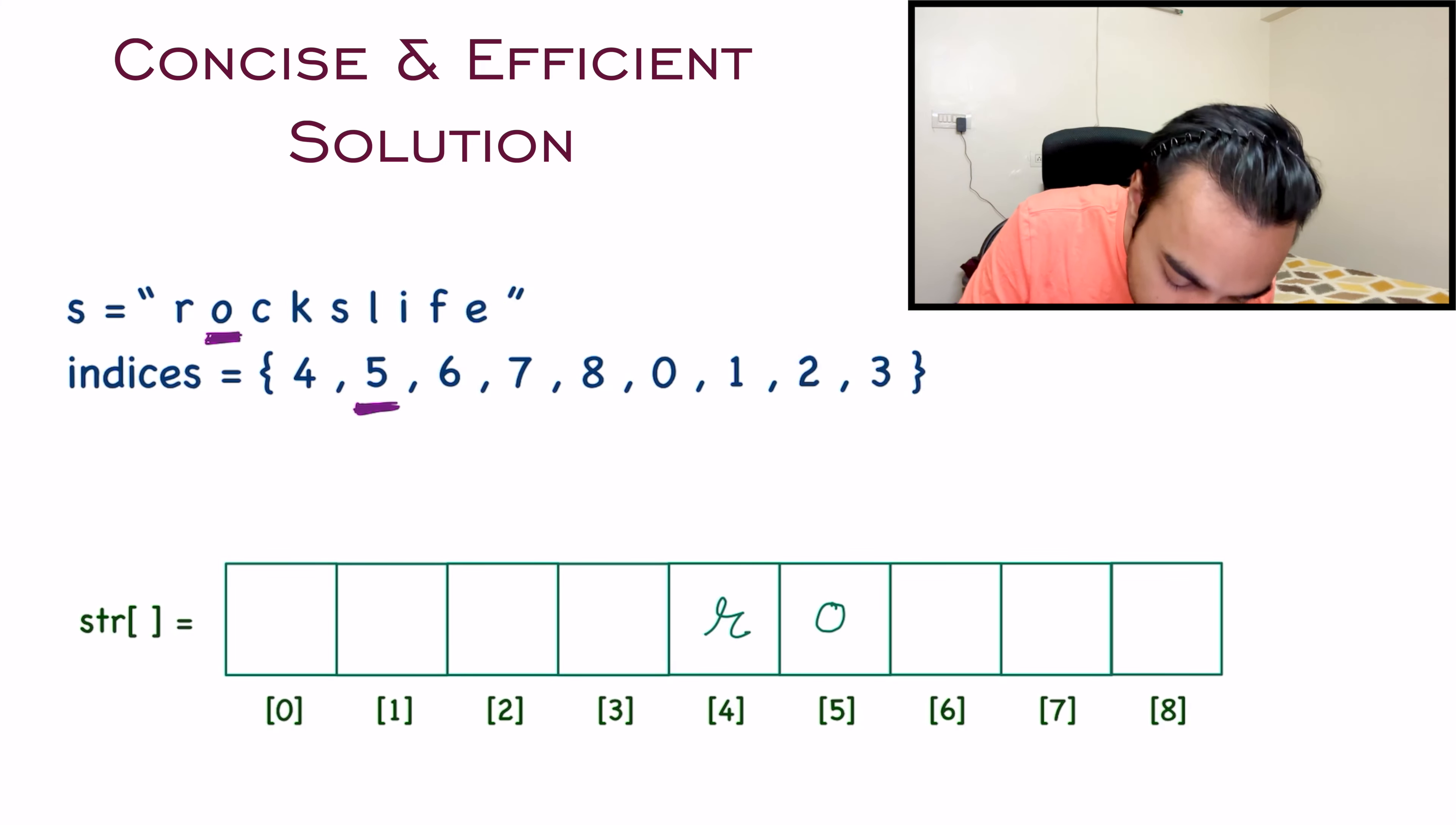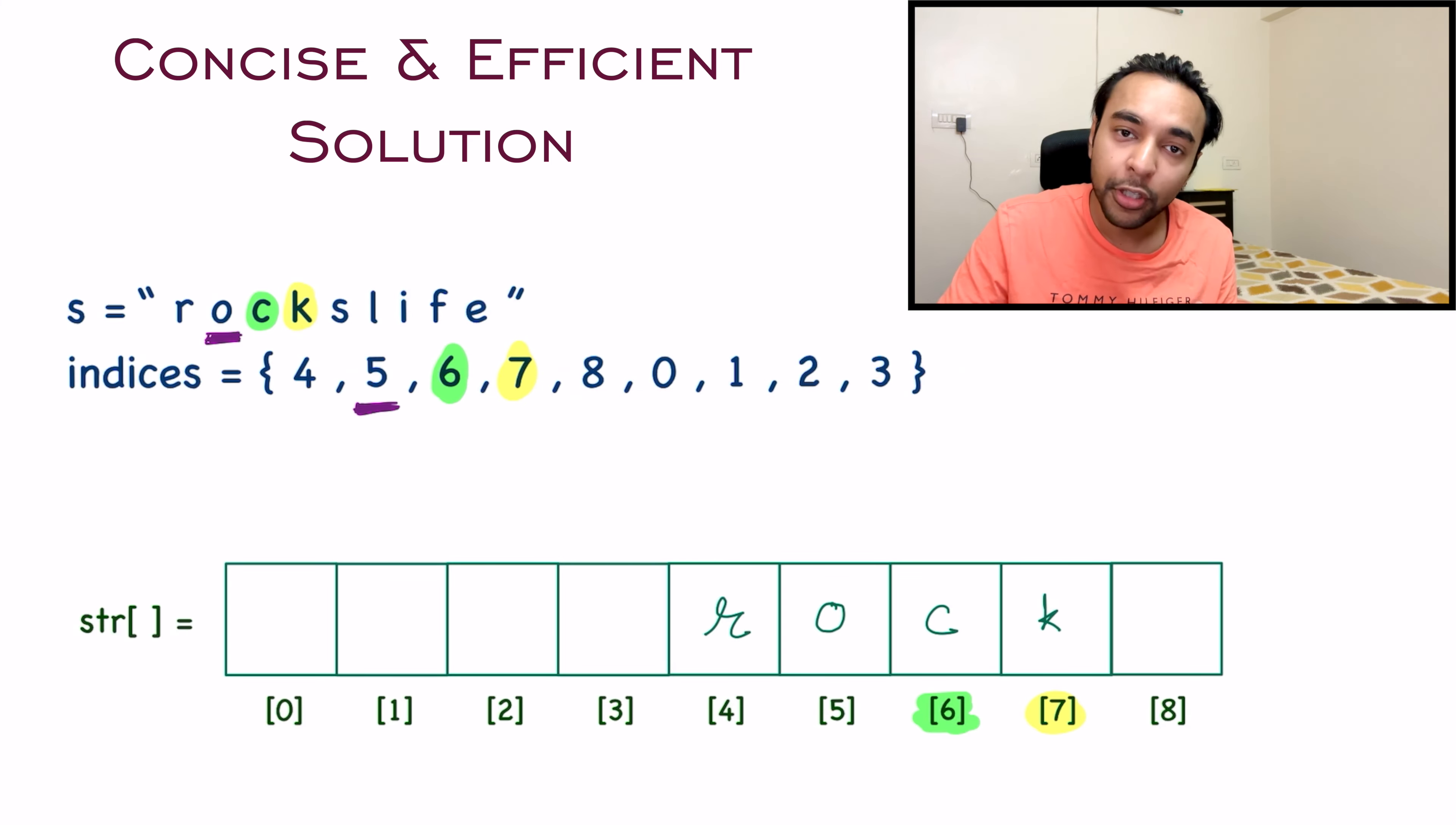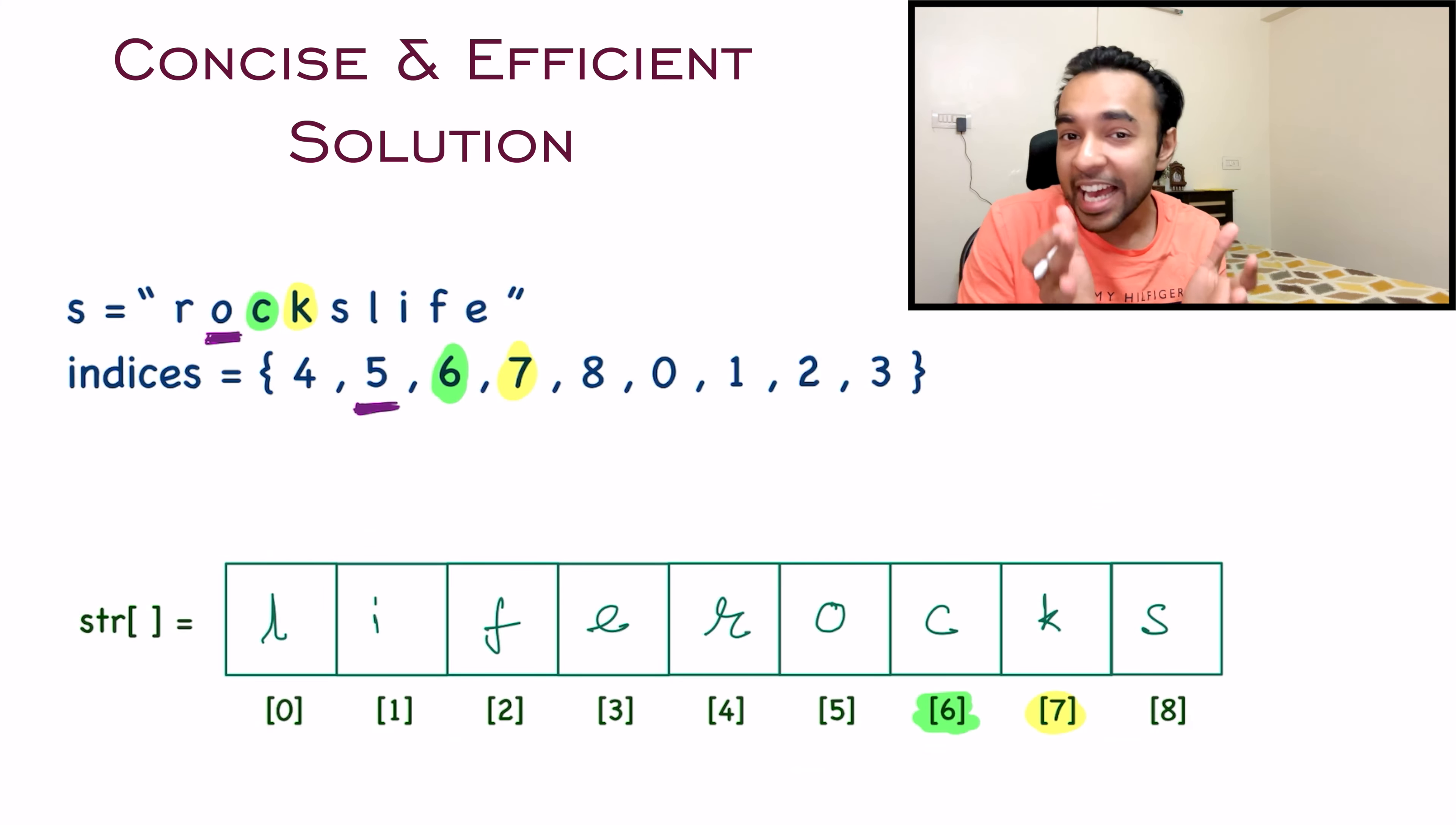Similarly, you will keep moving ahead. Where does the next character C go? C goes at the sixth index. So I'm gonna write down C at my sixth index over here. For the next character, that is K. Where does K go? K goes at the seventh index. So you add it at the seventh index over here. Similarly, you will keep on moving ahead for each character and then populate them at all of these specific indexes. Once you do that, your character array will start to look something like this. So now you see, this character array ultimately has your final string. Just convert this to a string and return it as your answer.